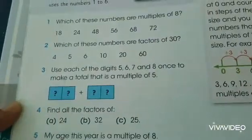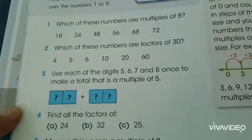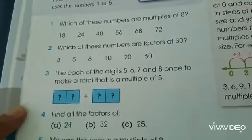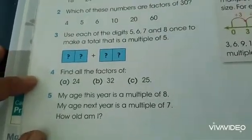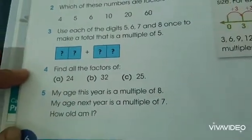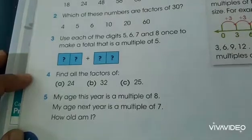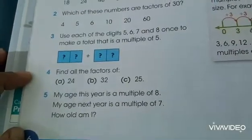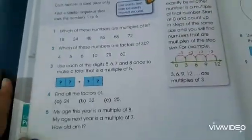Number 3, use these digits 5, 6, 7, and 8 once to make a total that is a multiple of 5. Number 4, find all the factors of 24, 32, 25. Number 5, my age this year is a multiple of 8. My age next year is a multiple of 7. How old am I? Let's try to do it.